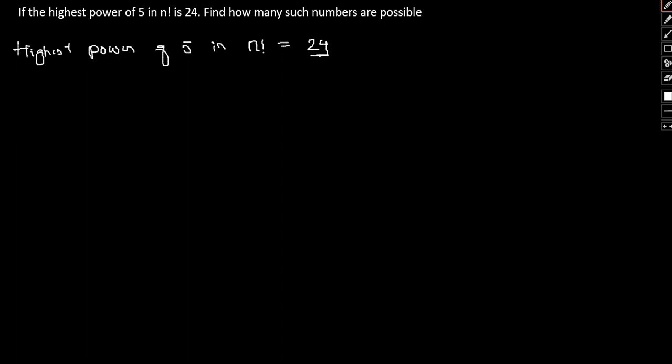Suppose we have the highest power of 5. So, suppose we have n. So, initially if we divide n by 5, this should yield me say 20.